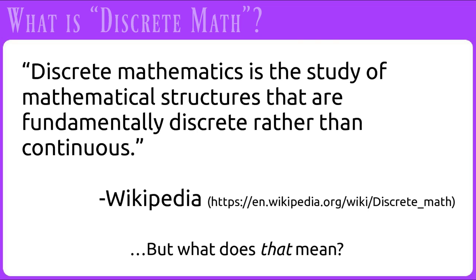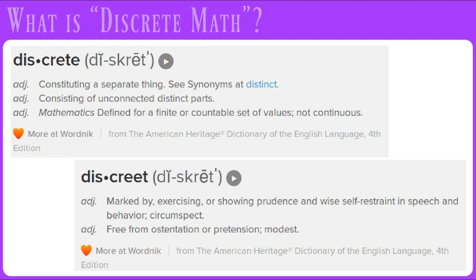So what is discrete math? Wikipedia defines it as the study of mathematical structures that are fundamentally discrete rather than continuous. You might be more familiar with the non-mathematical term for discrete, but it's actually spelled differently. In discrete math, it means that the items are distinct from each other.